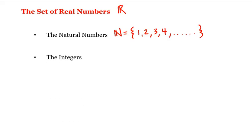The second subset to consider is what we call the integers. The integers are all these natural numbers together with their negatives and 0. And we represent the set of integers by a capital Z. So Z is all the negative natural numbers, together with 0, and then all these natural numbers.